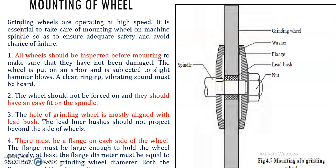Before mounting, we must inspect the grinding wheel. All grinding wheels should be inspected before mounting to make sure they have not been damaged. First, we check for any internal damage from manufacturing. Then the wheel is put on the arbor or spindle and subjected to certain hammer blows to check whether any ringing or vibrating sound is observed. If a ringing sound is heard, the wheel is okay; if not, there is some internal damage to the grinding wheel material.